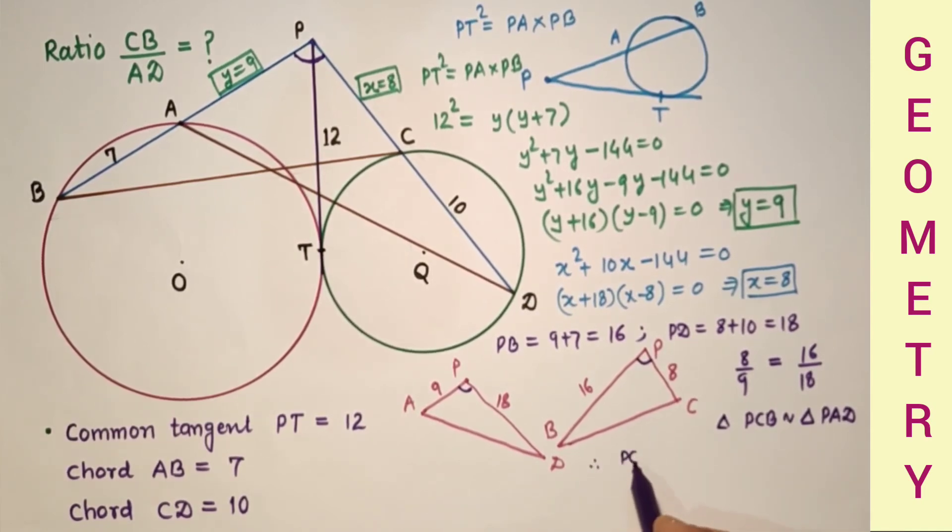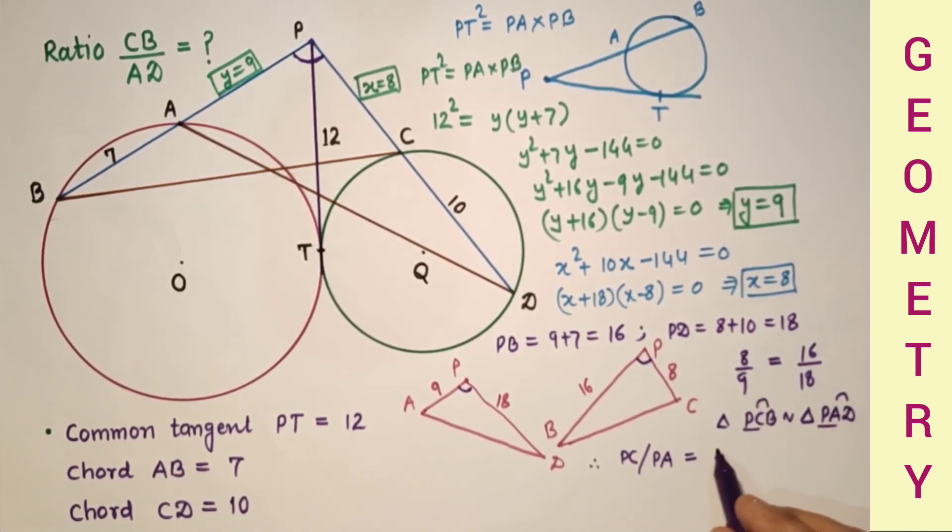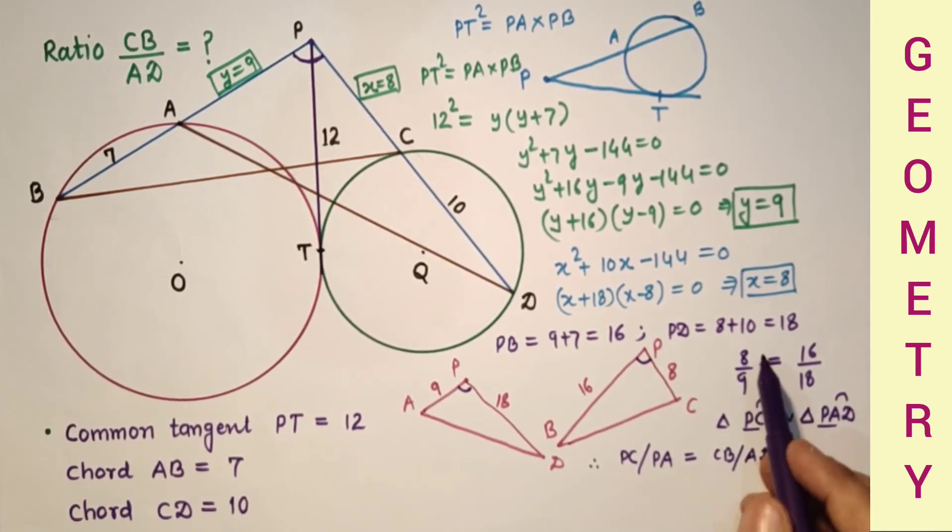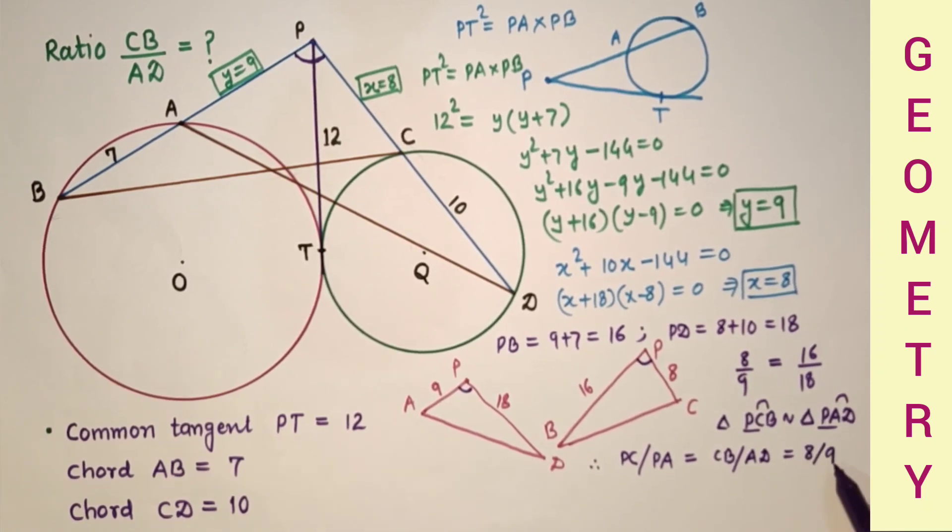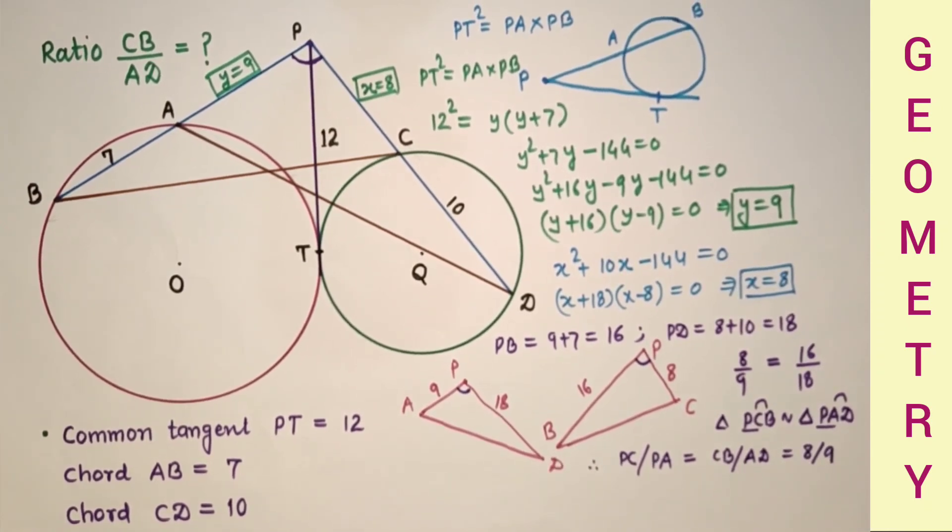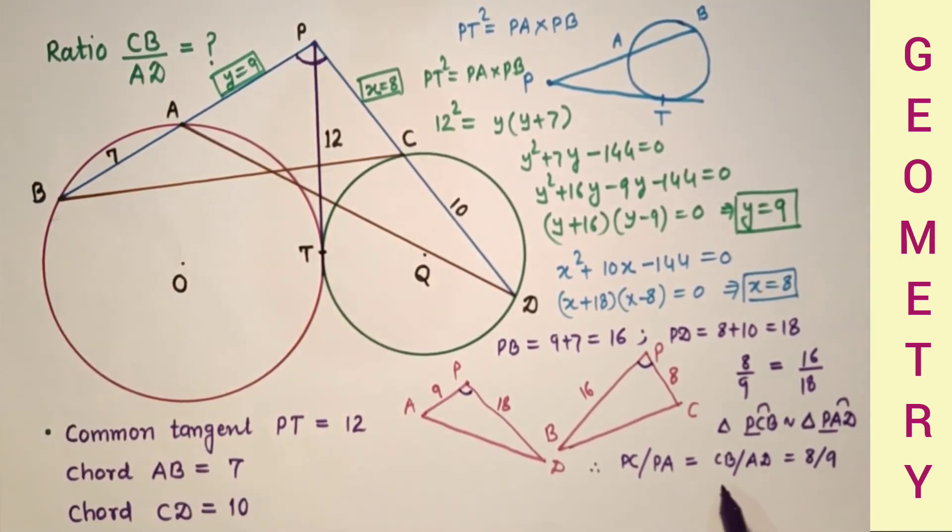So CB by AD, which is equal to PC by PA, is equal to 8 by 9. So the required answer is CB is to AD is equal to 8 is to 9. That is the answer.